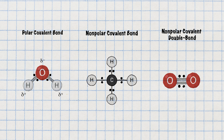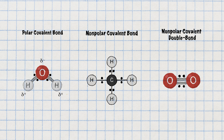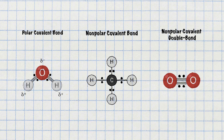In a polar covalent bond, like water, electrons are shared unequally — one atom hogs the electrons more of the time, so one atom is more negative and the other more positive. In non-polar covalent bonds, the electrons are shared equally; examples include oxygen gas or methane. These variations in charge difference influence the way molecules interact with each other, which is really important for life on Earth.